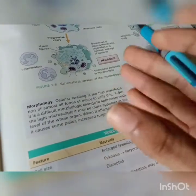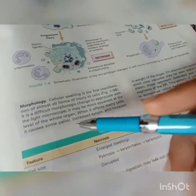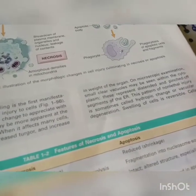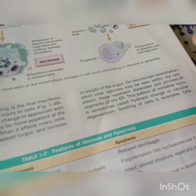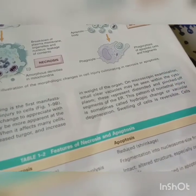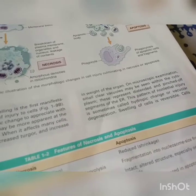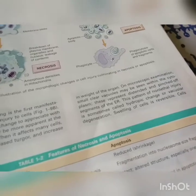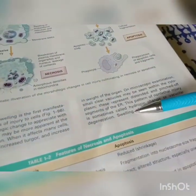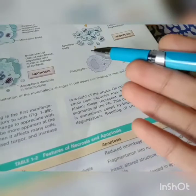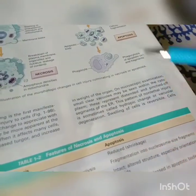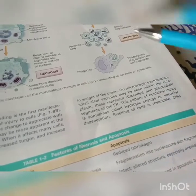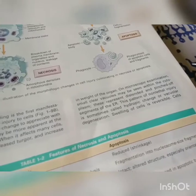Because of fatty change and cellular swelling, water accumulates and fat increases, resulting in pallor, turgor, and increased organ weight. On microscopic examination, small clear vacuoles are formed — lipid vacuoles in the fatty change — seen within the cytoplasm. These represent distended and pinched-off segments of the endoplasmic reticulum, because water accumulation in organelles leads to ER dilation and detachment of ribosomes.